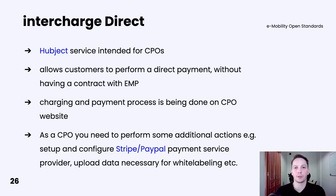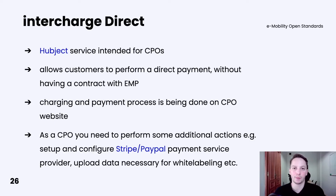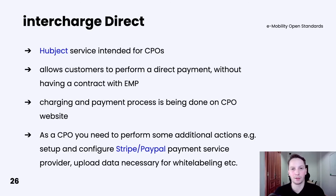Now we're going to talk about solutions offered by Hubject that are not strictly connected with the OICP protocol. The first one is Intercharge Direct. In general, this solution allows customers to perform a direct payment to the CPO without having any additional contract with an EMP. This product is mostly intended for CPOs as it increases their customer base. The flow is simple: the customer scans a QR code at the charge point, then the CPO-specific website is loaded, the customer chooses a charging product and payment provider, agrees on terms and conditions, performs payment, and the charging session starts.